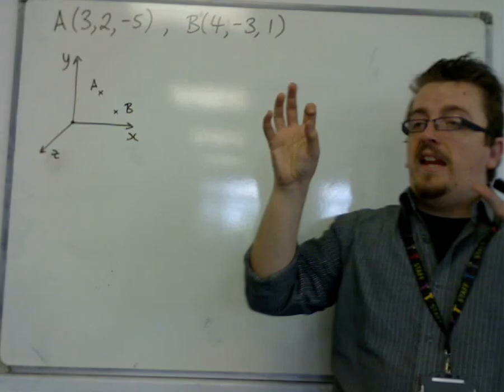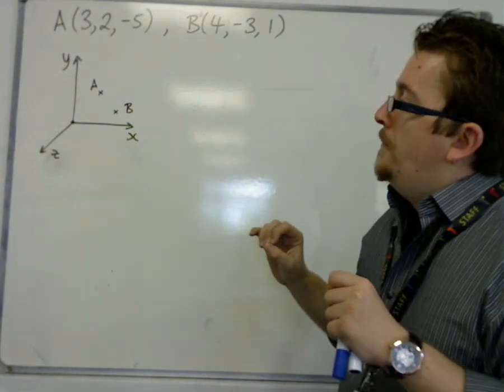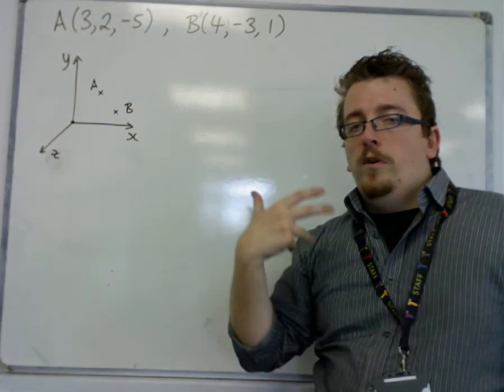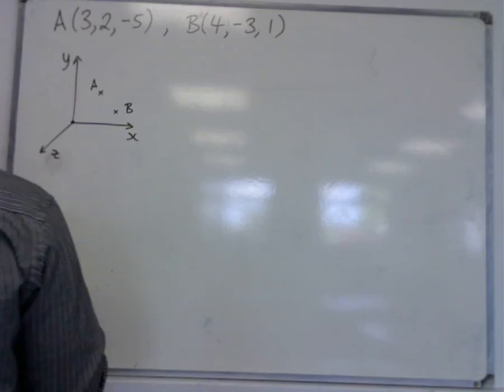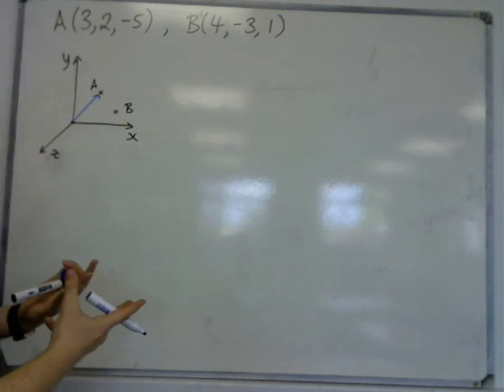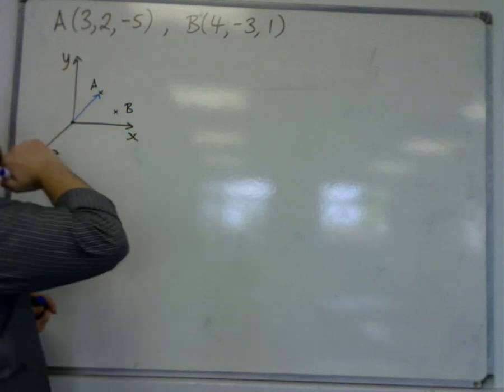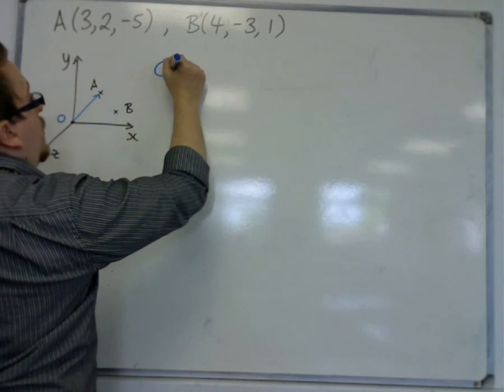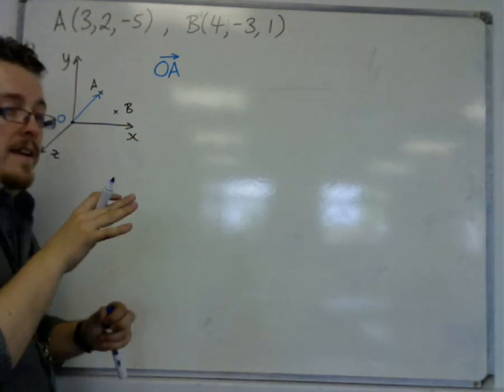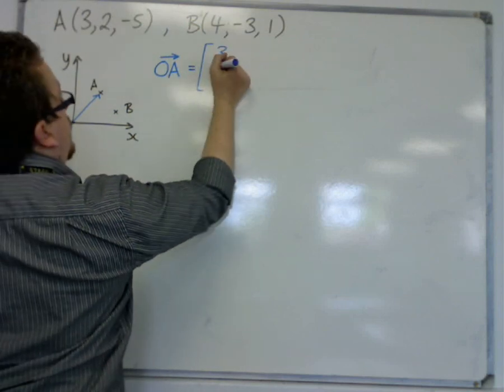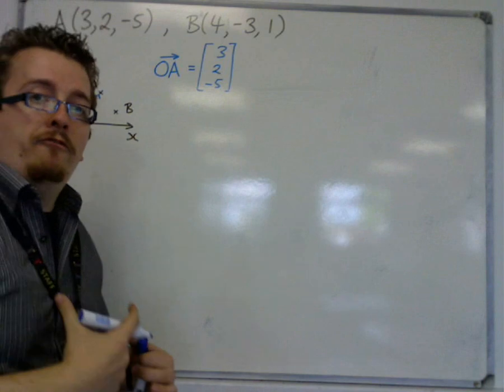But these are points in space, and these are the coordinates for A. If we're looking at a vector, then a vector that goes from the origin to A - you should know that a vector is a line with direction - so going from the origin to A, if we call the origin O, I would write that as O to A with an arrow on top.